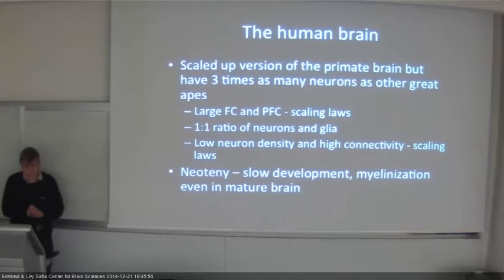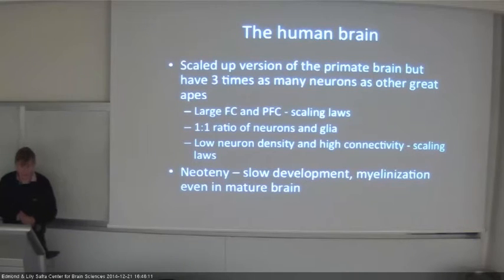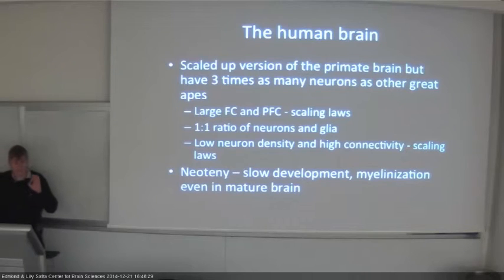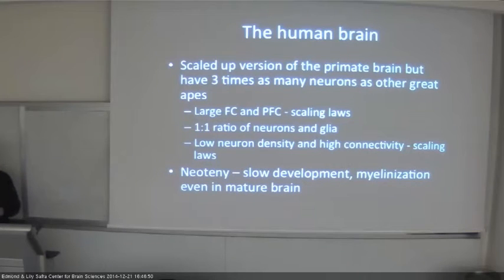To summarize what we've been saying about the brain: we have a scaled-up version of a primate brain with many more neurons. We have a large frontal and prefrontal cortex in absolute terms, larger than any other primate, but it obeys normal primate scaling rules. We have a one-to-one ratio of neurons and glia. We have low neuron densities but high connectivity. And fundamentally — the big important difference — we have neoteny: we develop slowly, continuing to develop even when relatively old, which is a major difference compared to other primates.